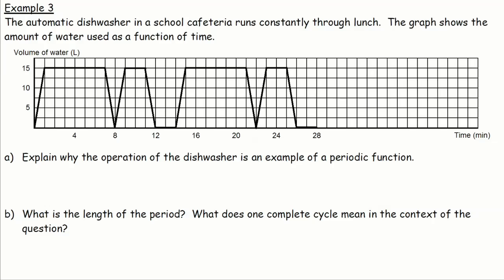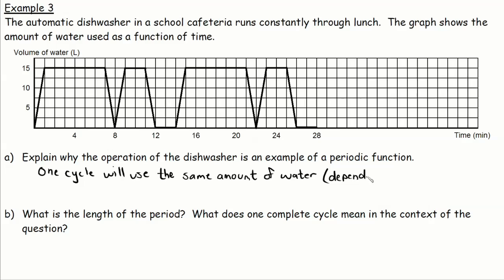In the last example, an automatic dishwasher in a school cafeteria runs constantly through lunch. The graph shows the amount of water used as a function of time. In part a, we explain why the dishwasher's operation is an example of a periodic function. Since y-values represent volume of water and x-values represent time, the dishwasher is periodic because it uses the same amount of water each cycle and runs for the same length of time — one cycle uses the same amount of water over the same time interval.